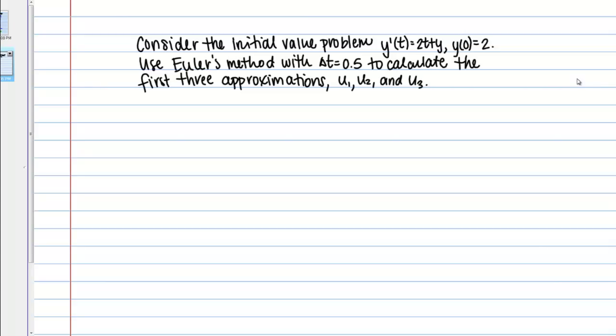Consider the initial value problem: y prime of t equals 2t plus y, with y of 0 equals 2. Use Euler's method with delta t equals 0.5 to calculate the first three approximations u1, u2, and u3.